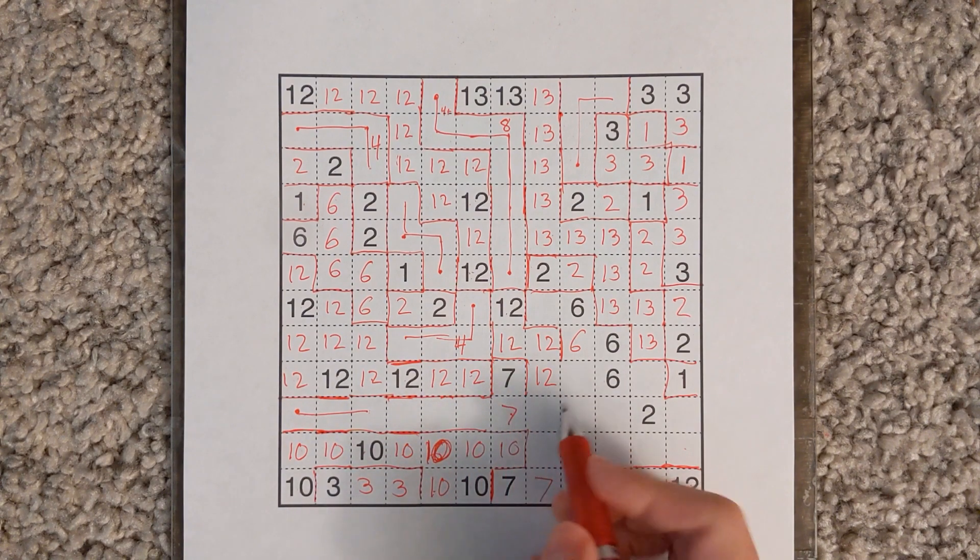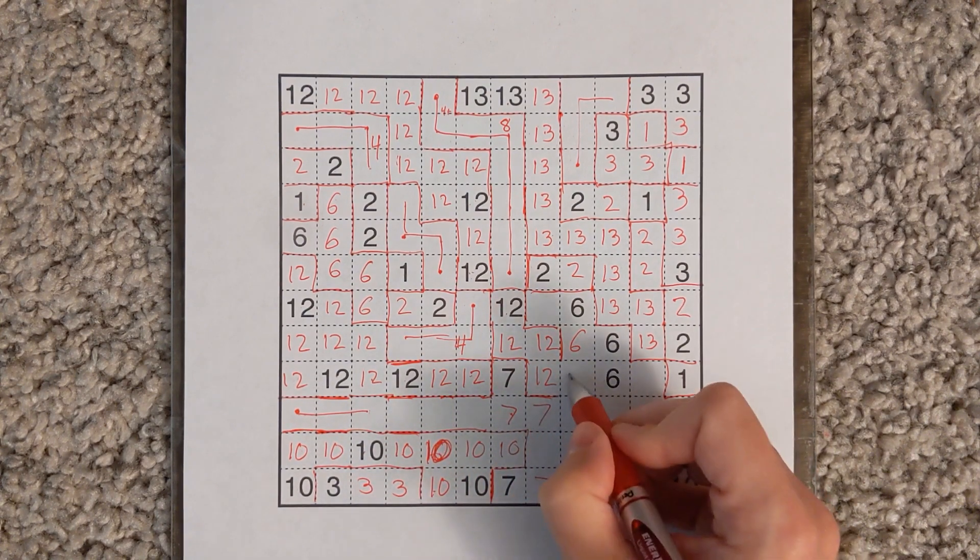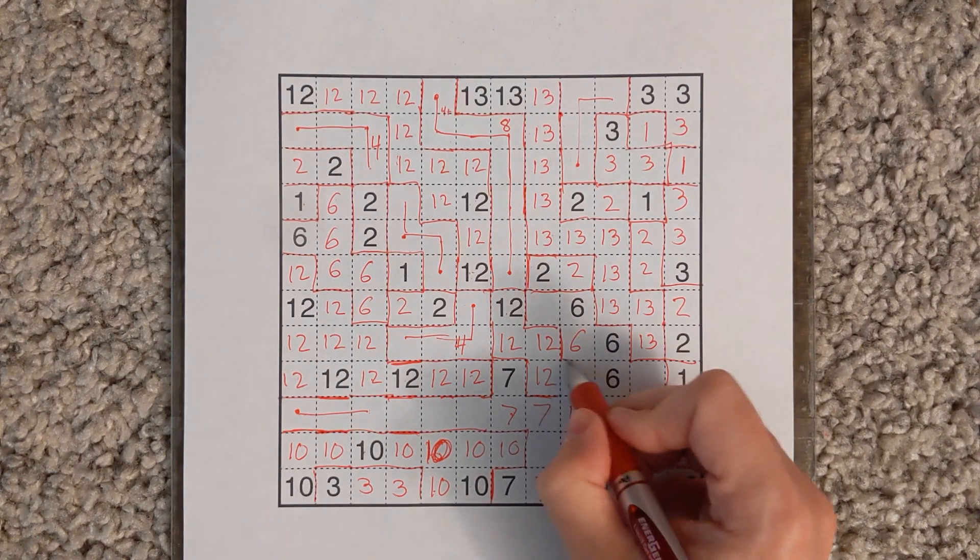This 7 can't reach all the way over to this group because that would be 8 cells. So it could take 1, 2, 3, 4, 5, 6, but has to take this. So now the 12 is going to keep extending.